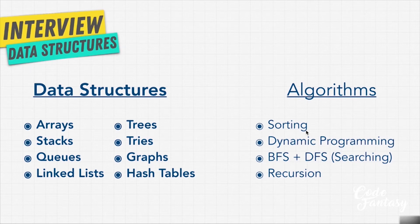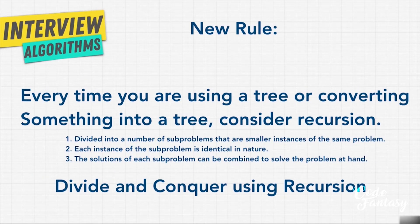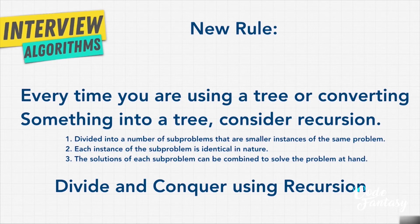When it comes to recursion, these are the rules that I like to follow. Every time we're using a tree or converting something into a tree, consider recursion. There are three key things in an interview question that might trigger a recursive solution. One is that a problem can be divided into a number of subproblems that are smaller instances of that same problem, such as the exercises we've done with Fibonacci numbers or factorial. We can break those down into little trees that break down to smaller and smaller pieces — those are inherently recursive problems.